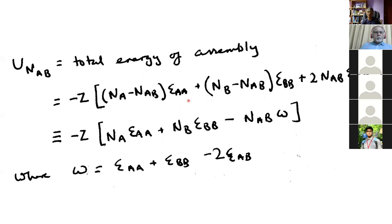The total internal energy of our assembly is: half the binding energy of AA atoms times the number of AA bonds, plus the BB contribution, plus the AB contribution — where AB can be distinguished from BA. Simplifying, that gives minus Z times a term involving omega, where omega represents the energy change when an AA bond and a BB bond are broken and two AB bonds are formed. This is the same as in the regular solution model.